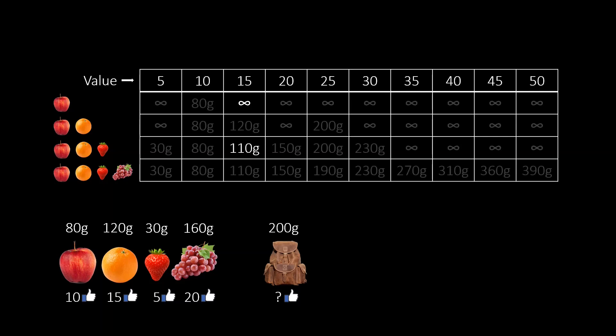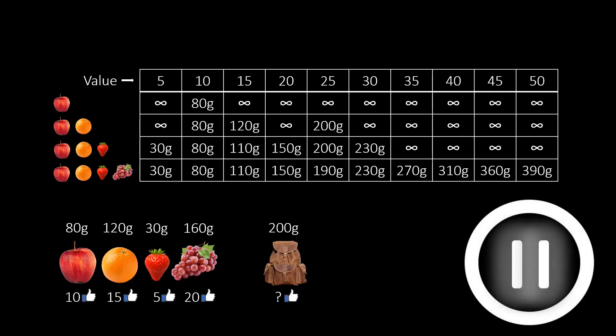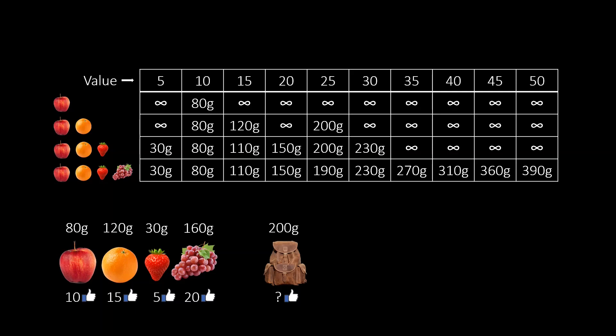Given all values in the table, how can we find the answer to the knapsack problem? Since all four fruits can be used in the knapsack problem, we look at the last row. In this row, we look for the rightmost entry that is not larger than the capacity of our knapsack. In this case, this is 190 grams.